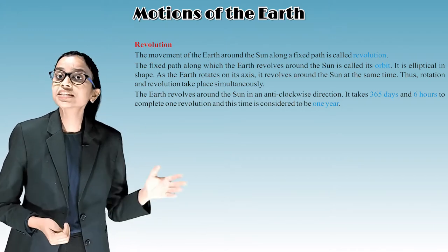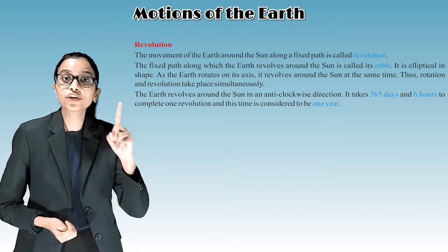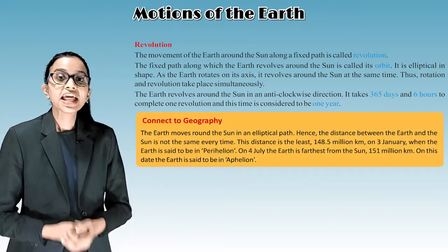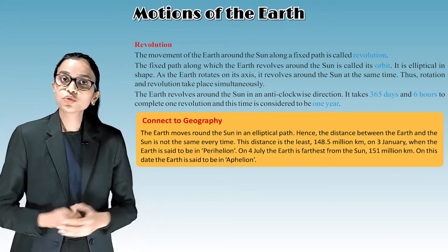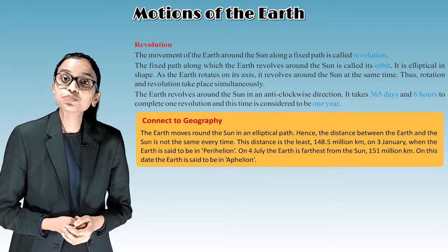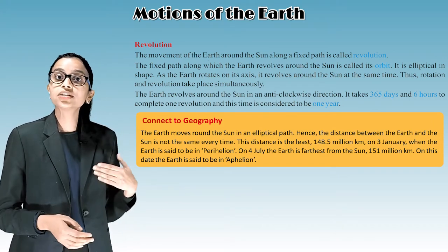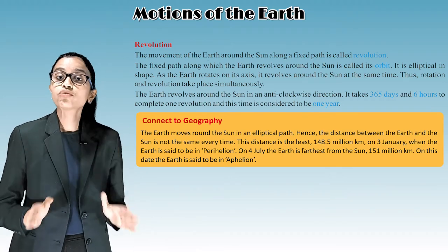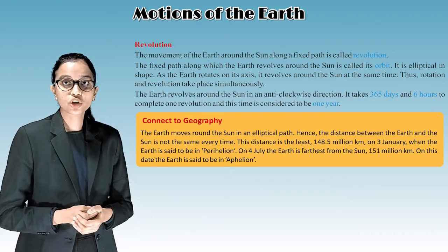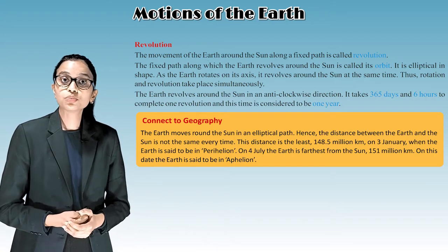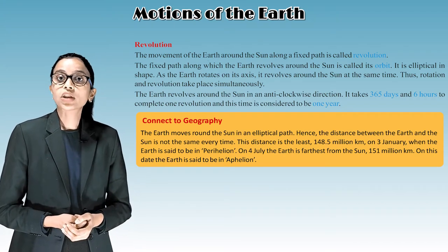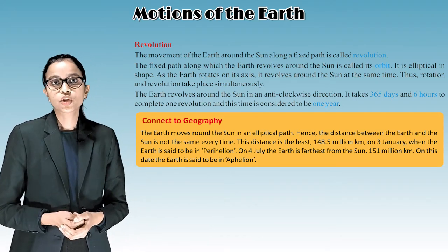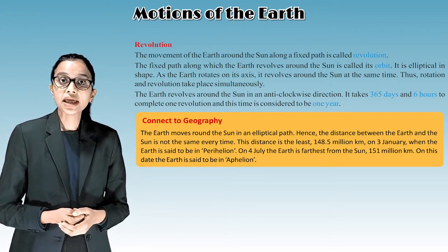It takes 365 days and 6 hours to complete one revolution, and this time is considered to be one year. The earth moves around the sun in an elliptical path, so the distance between the earth and the sun is not the same every time. This distance is the least — 148.5 million kilometers — on 3rd January, when the earth is said to be in perihelion. On 4th July, the earth is farthest from the sun at 151 million kilometers, and the earth is said to be in aphelion.